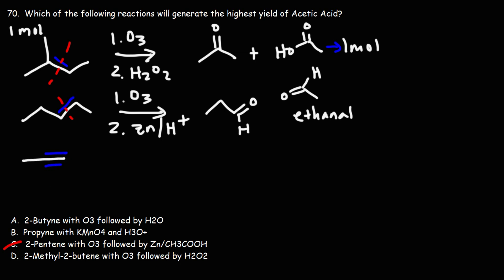Now moving to answer choice B, we have propyne, a three-carbon alkyne, and we're going to react it with potassium permanganate with H3O+. So under acidic conditions, potassium permanganate is a strong oxidizing agent. This is going to be fully oxidized. On the left we have two carbons, so when you fully oxidize a primary carbon you get a carboxylic acid. On the right we just have one carbon, a methyl carbon. A methyl carbon fully oxidized will go to CO2.